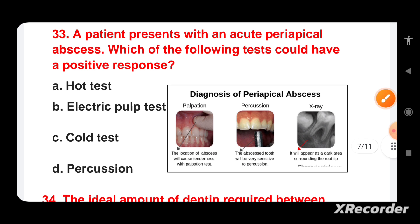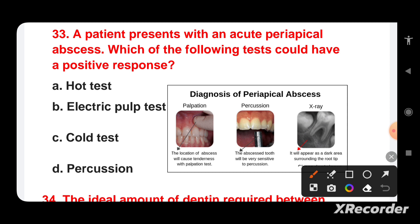A patient presents with an acute periapical abscess. Which test could have a positive response? Options are: hot test, electric pulp test, cold test, or percussion test. Diagnosis of periapical abscess involves palpation, percussion, and X-ray. Palpation identifies the abscess location causing tenderness, and the affected tooth will be very sensitive to percussion. On X-ray, a dark area surrounding the root tip is visible. Since percussion is the option given, that is the correct answer.